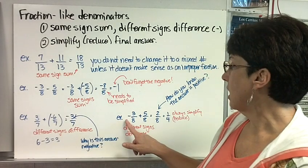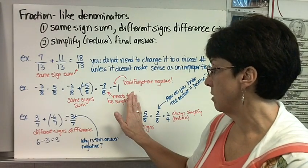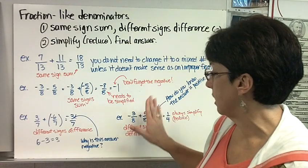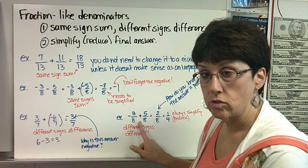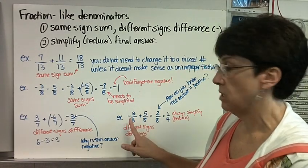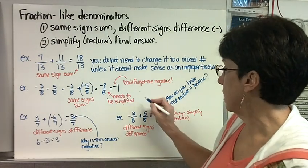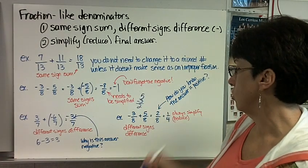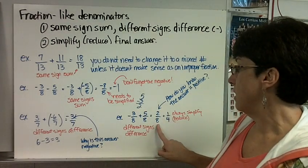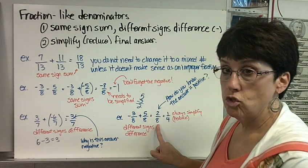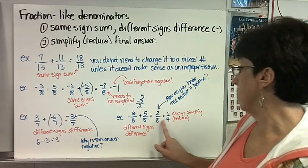In the last example, negative 3 eighths plus 5 eighths. Different signs again, because if we just looked at the terms, this is a positive and that's a negative. So I take the difference. But is this one going to be positive or negative? You always think about that first. Well, I have more positives. I have 5 of those and I have 3 negatives, so my answer's going to be positive. So now what I'm thinking is 5 minus 3 equals 2. So 2 eighths. How do you know it's positive? Because there are more positives to begin with. Now this 2 eighths can be simplified because 2 and 8 both have a common factor of 2. So divide the numerator and the denominator by 2. You get 1 fourth.